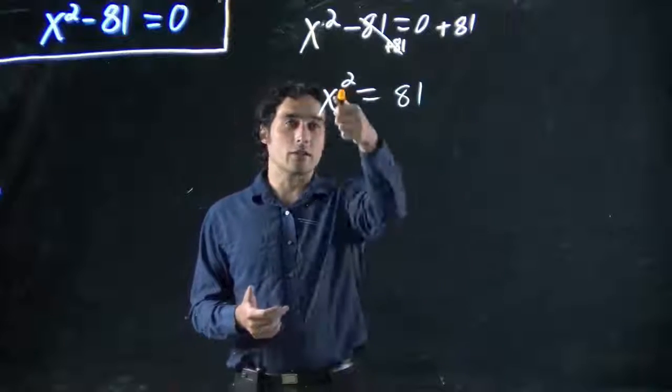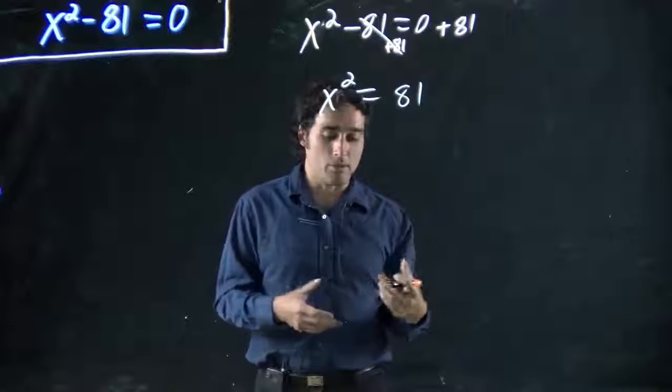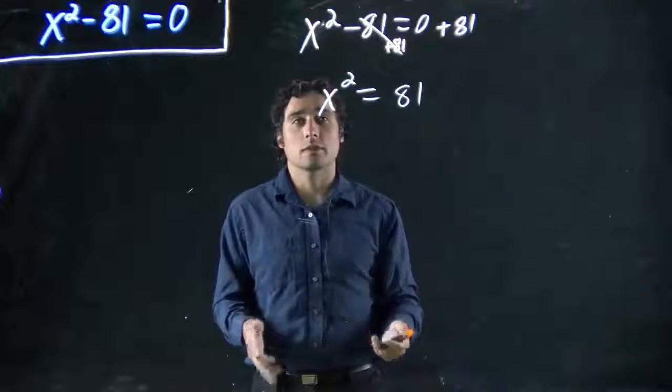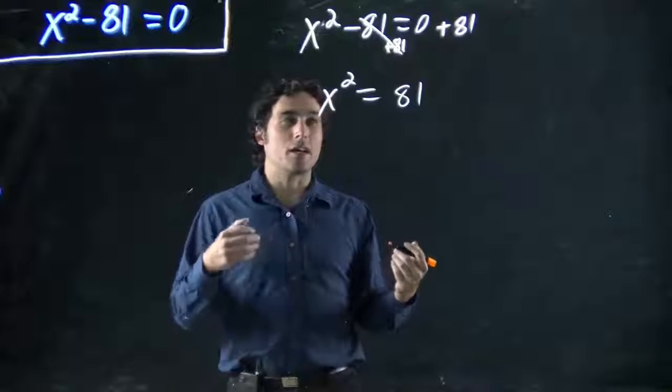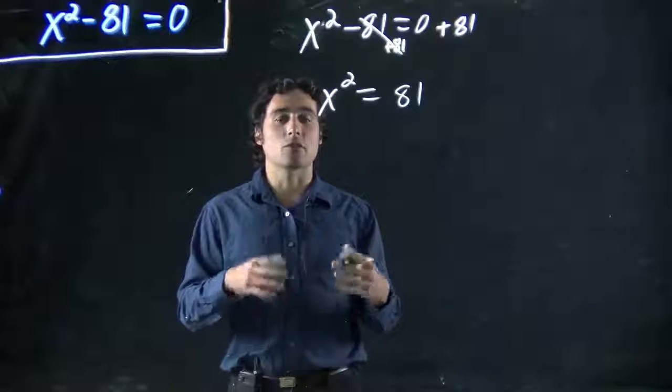Now we've got to get rid of the squared. What a lot of people think immediately is to do square root, because that's what we're taught. Squared, square root cancel each other out. But that's a specific case of a more general rule.